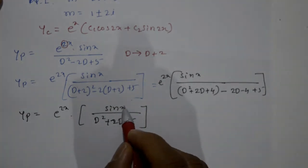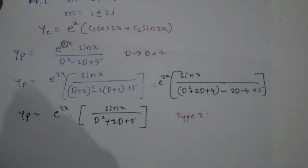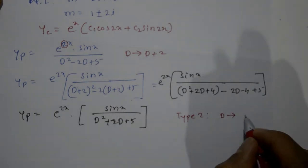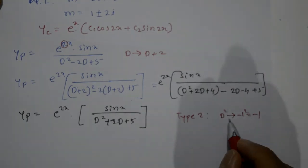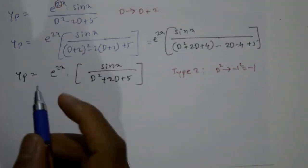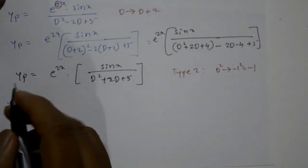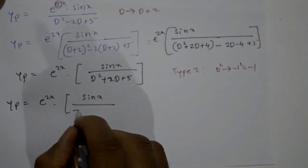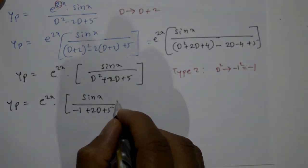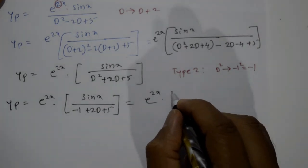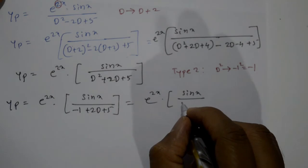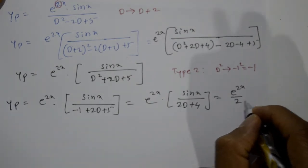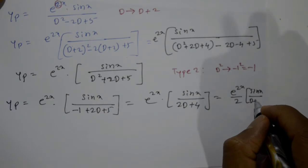This is now Type 2 (sin/cos). Replace D² with -1 (since a=1 for sin x, D²= -1²= -1). So the denominator becomes -1 + 2D + 5 = 2D + 4. Taking 2 common: yp = e^(2x)·sin x / (2(D + 2)), giving e^(2x)·sin x / (2(D+2)).